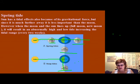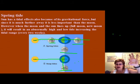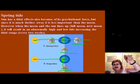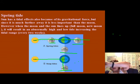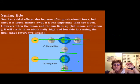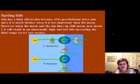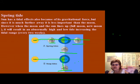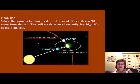During neap tide, the high tide is lower than normal. In the monthly moon cycle, the tide at new moon is really high, then gets lower until it reaches neap tide at first quarter, then rises again to the highest high tide at full moon, then drops again to neap tide at last quarter. The Earth cycles between the higher-than-normal spring tide and the lower-than-normal neap tide intervals.